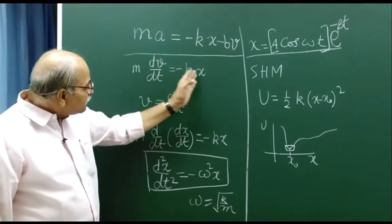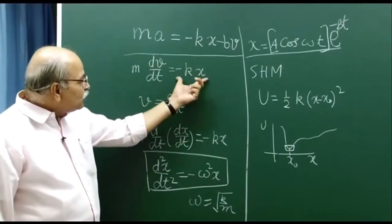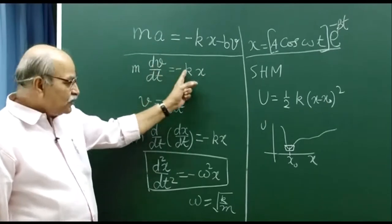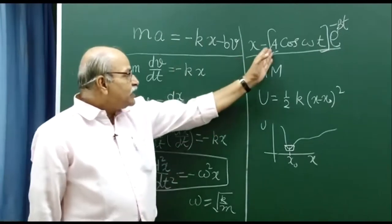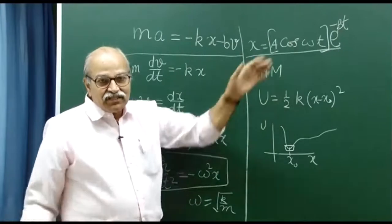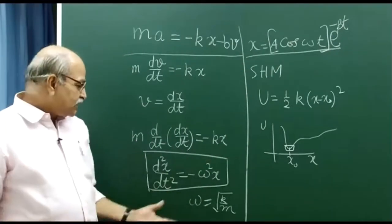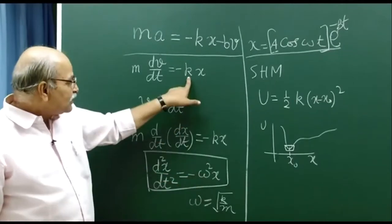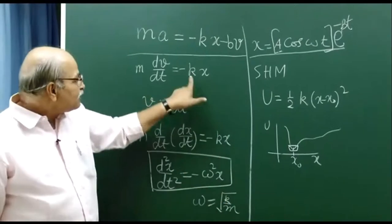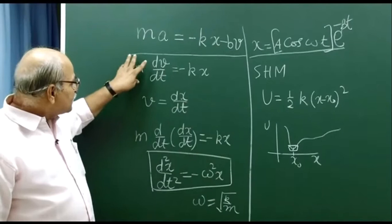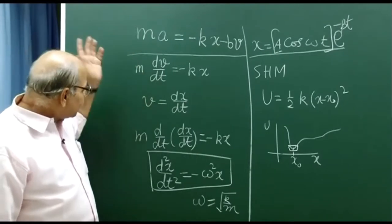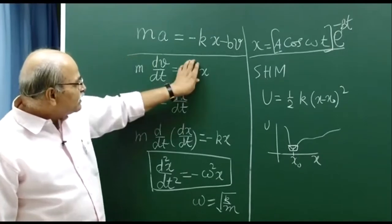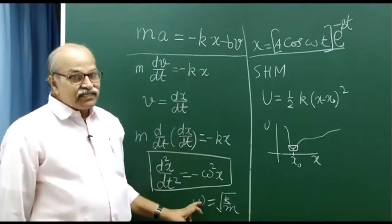If there is no damping or any other force, and it is only this restoring force which is driving the system in oscillations, then you have something like x equal to A cos(omega t) — constant magnitude oscillations. This is the differential equation with a certain frequency omega, which will depend on the restoring force constant k and on some property of the system — mass, moment of inertia, or something similar.